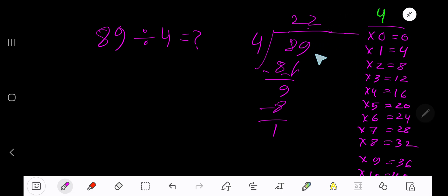If you want to write your answer in decimal form, then take a decimal, add number of zeros. Bring down the first zero. Before the zero, there is a decimal. Decimal must come to the quotient directly.